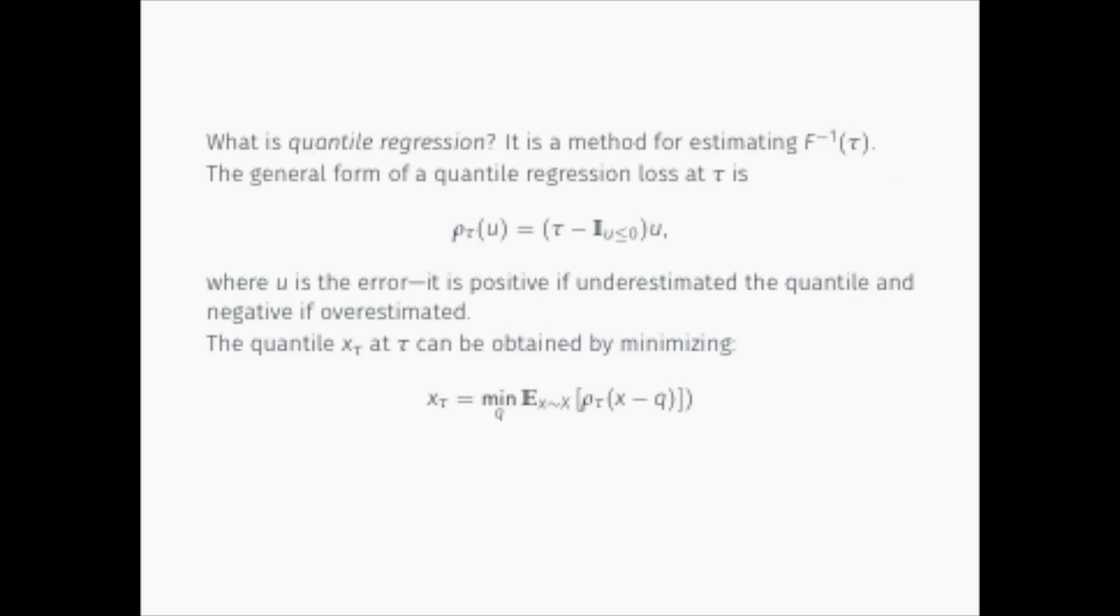Quantile regression is a method for estimating quantile. Here is a general form of a quantile regression loss. U is the estimation error. It will be positive if we underestimate the quantile, and negative if we overestimate the quantile. And I is an indicator function based on the positivity of U.